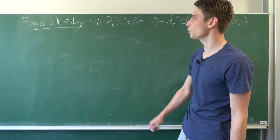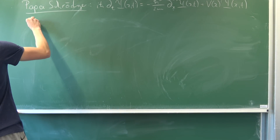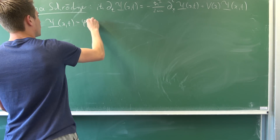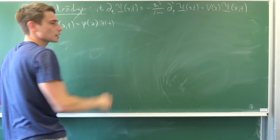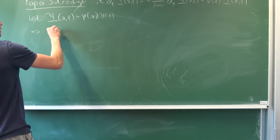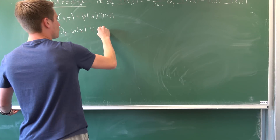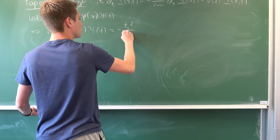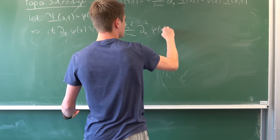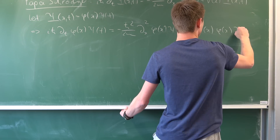Just like before, we want to make the wave function into a product solution. So let psi of x and t equal phi of x times small psi of t. Plugging this into the Schrödinger equation, we have i times the reduced Planck constant times the partial derivative of phi of x times psi of t, equal to minus h-bar squared over 2m times del-squared over dx-squared of phi of x times psi of t, plus V times phi of x times psi of t.